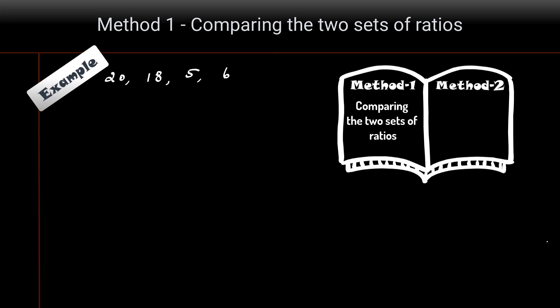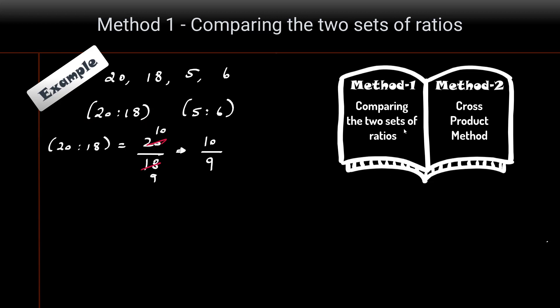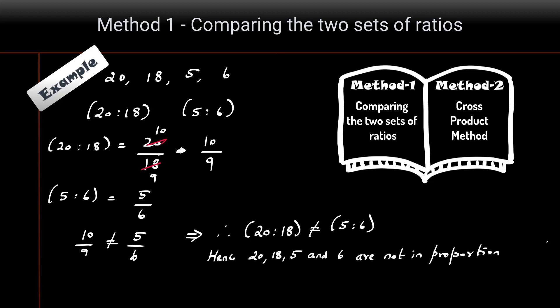Method one: comparing the given sets of ratios. We compare 20:18 and 5:6. Reducing 20:18 to lowest terms — dividing by common factor 2 — we get 10/9. And 5:6 is already in simplest form. Since 10/9 ≠ 5/6, we conclude that 20, 18, 5, and 6 are not in proportion.